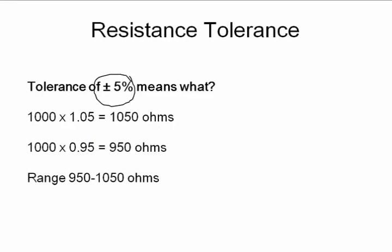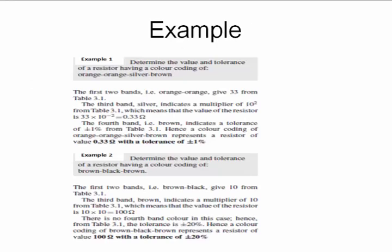So tolerance of 5 percent means if it's a 1 kilo ohm, say for example, the resistance is 1 kilo ohm plus or minus 5 percent. That means it can be within 5 percent of that value. So range would be 950 to 1050 ohms.